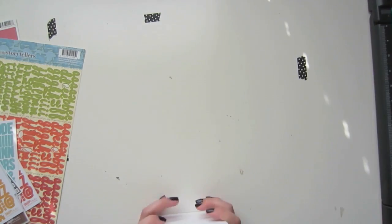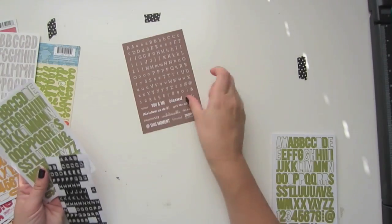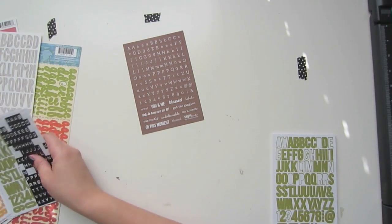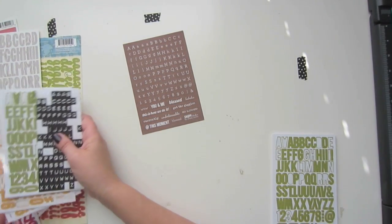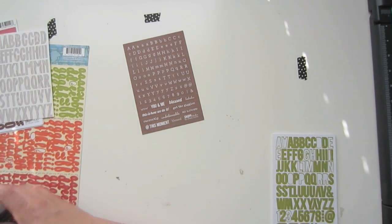I also have the snap square ones, which look like this. And I like these, but I just prefer the actual alphas to these.